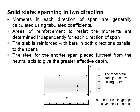The moments in each direction of span are generally calculated using tabulated coefficients. These coefficients can be obtained from BS8110. The amount of reinforcement to resist the moments are determined independently for each direction of span.